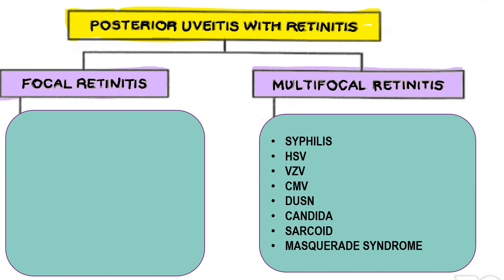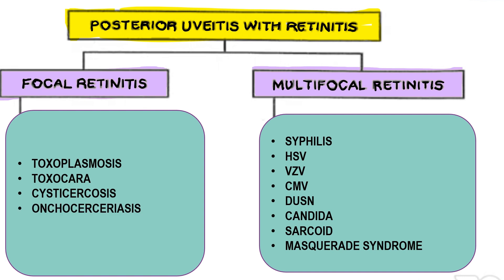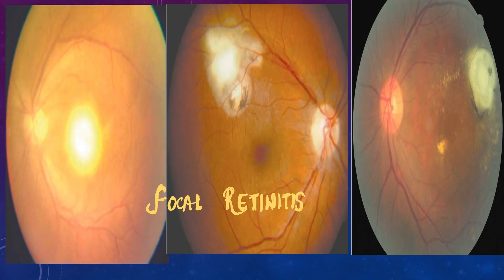The causes of focal retinitis include toxoplasmosis, toxocara, cysticercosis, onchocerciasis, and various masquerade syndromes. Masquerade syndromes are conditions which can mimic uveitis but are actually not uveitis — they are called masquerading syndromes. So the key causes of focal retinitis to remember are toxoplasmosis, toxocara, cysticercosis, and onchocerciasis, along with some masquerade syndromes.